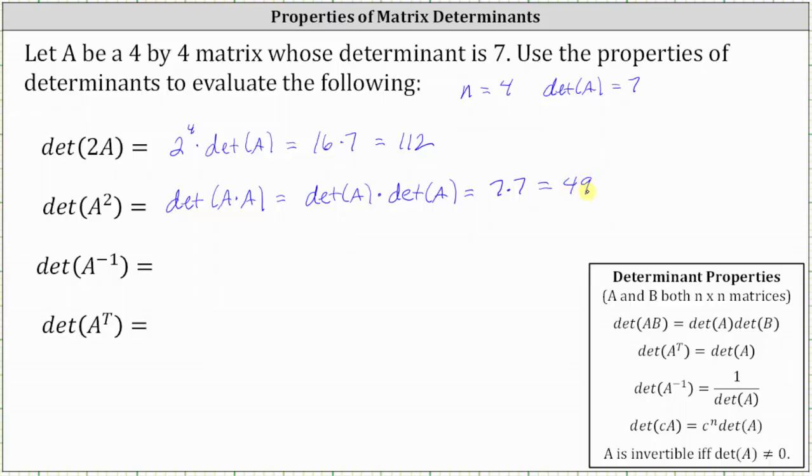Next, we have the determinant of A inverse. The determinant of A inverse is equal to one divided by the determinant of A. So we have one divided by the determinant of A, which gives us 1/7.